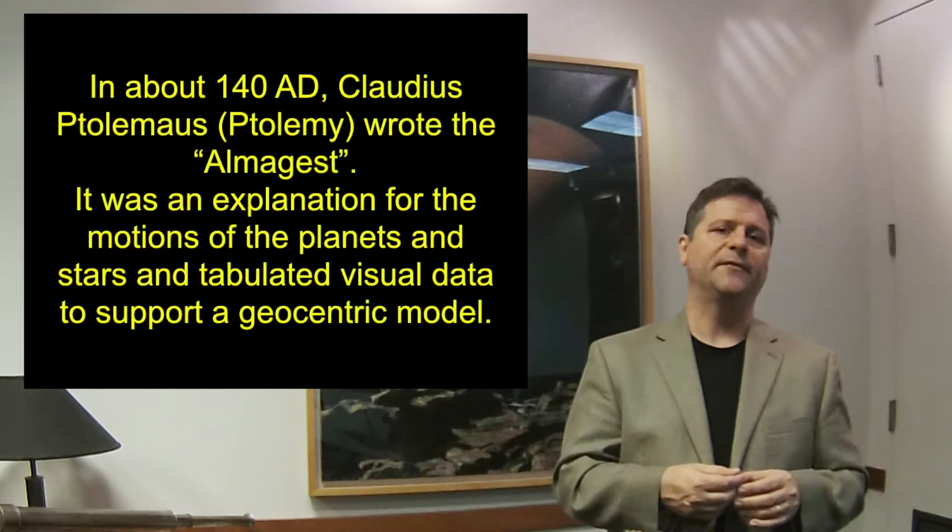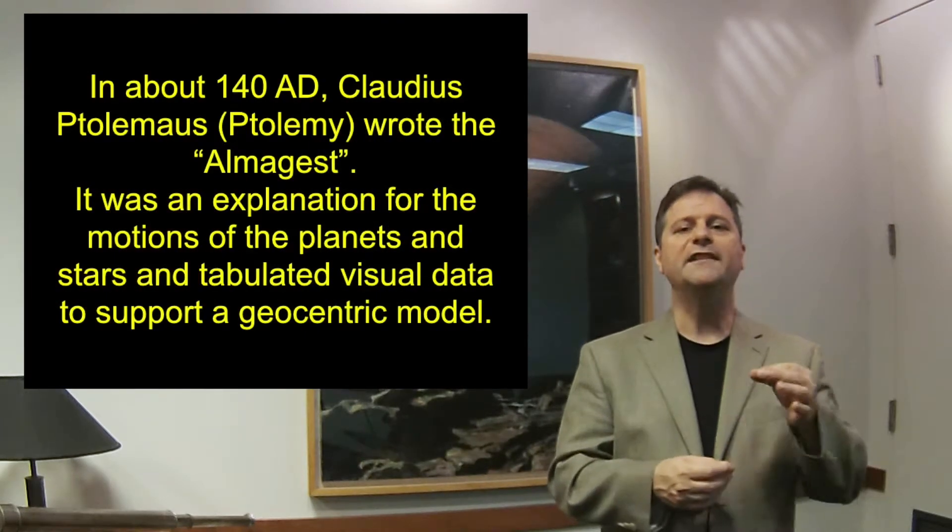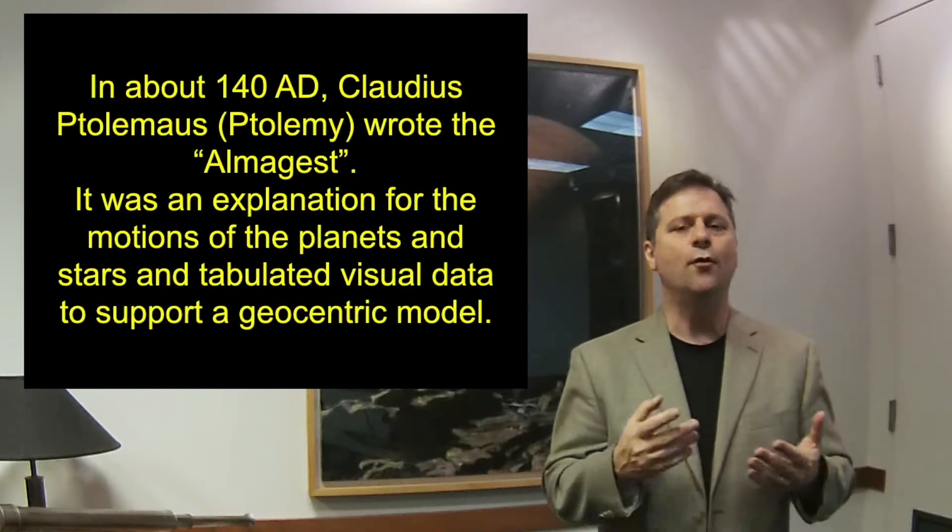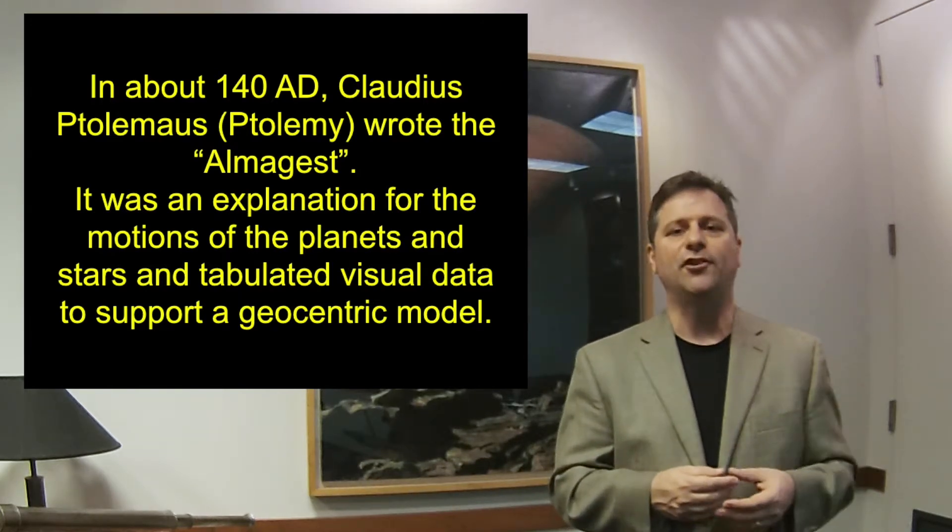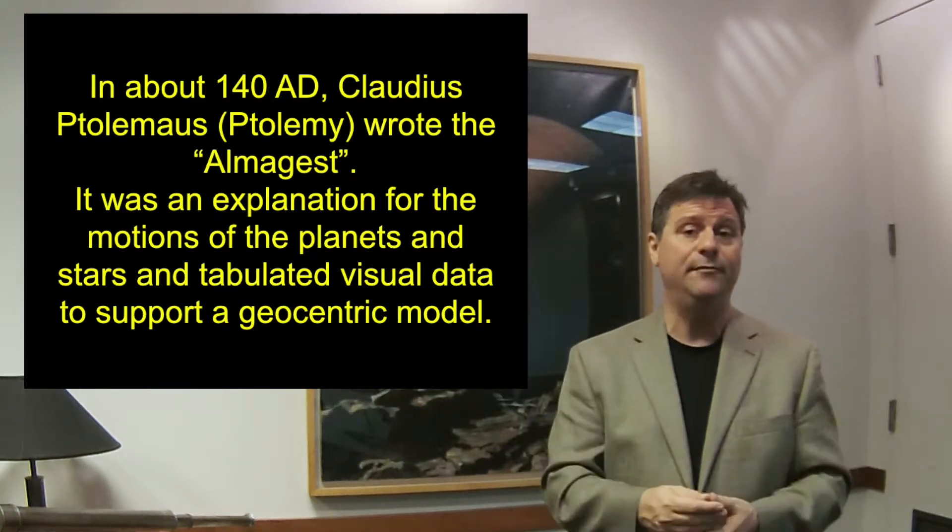But his models worked and models that work stay put in science until there's something that breaks the model. And that's the important thing that occurred later. But let's actually find how we can build a model. In 140 AD, about 500 years after Aristotle, the Greek philosopher, mathematician, Claudius Ptolemaeus, wrote his Almagest. And the Almagest was an enormous undertaking where he plotted the charts of the heavens and tried to determine how things actually move.